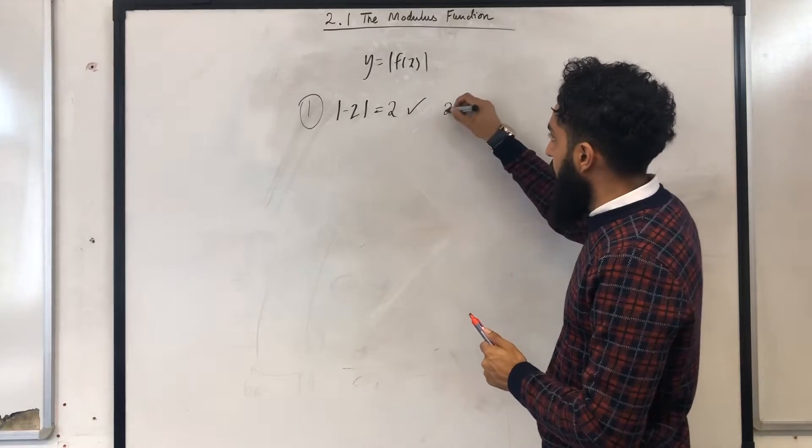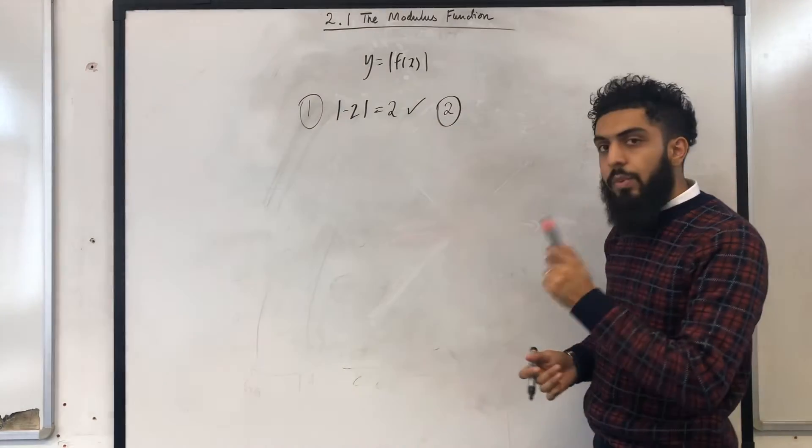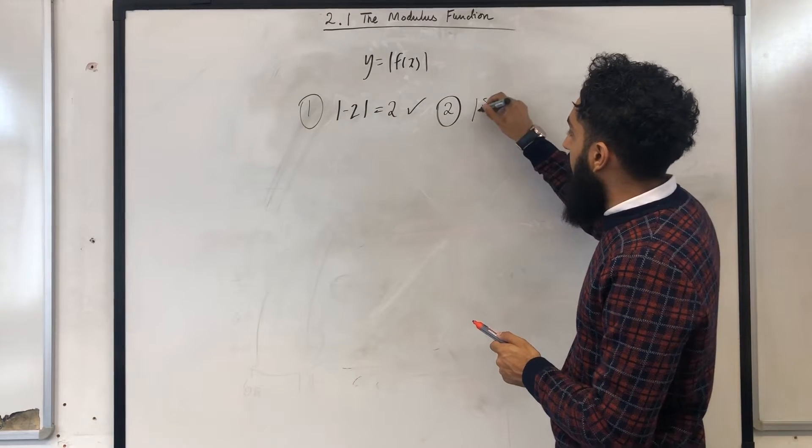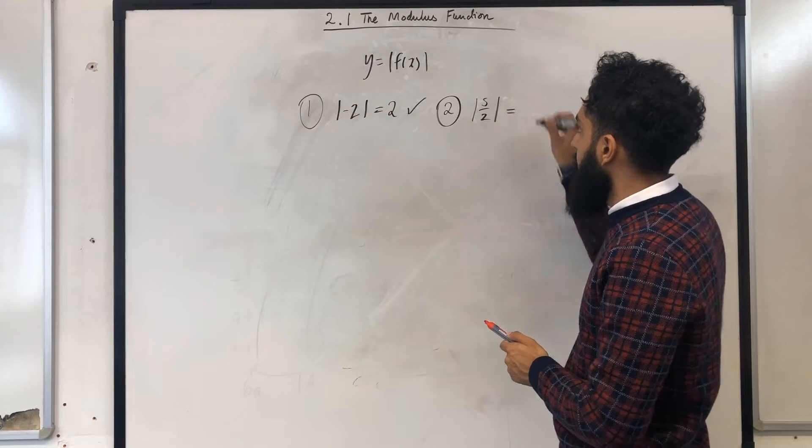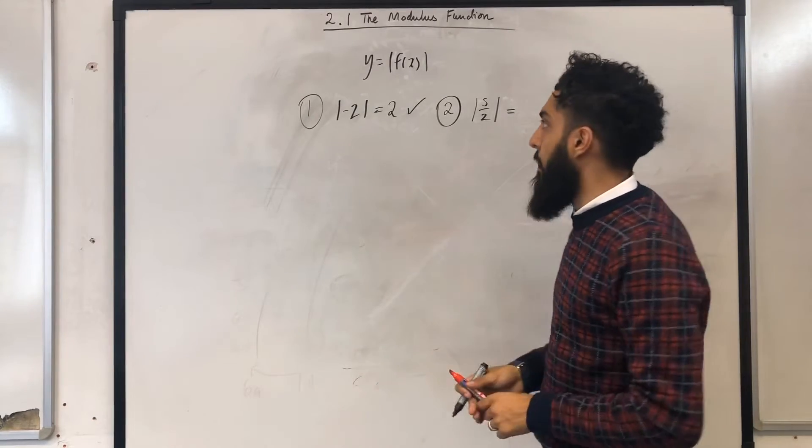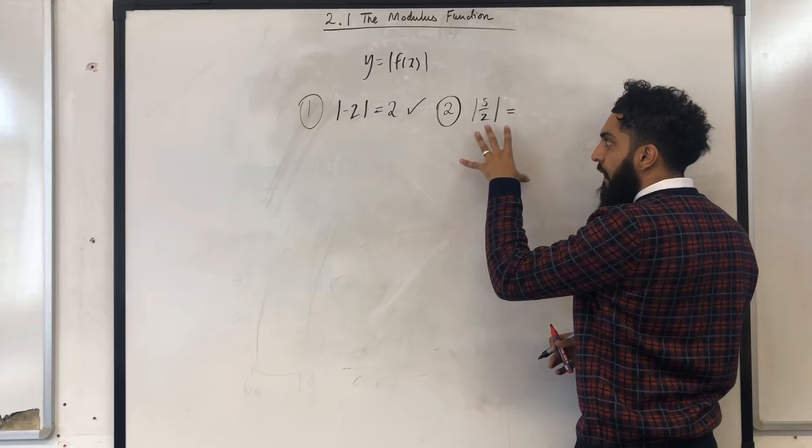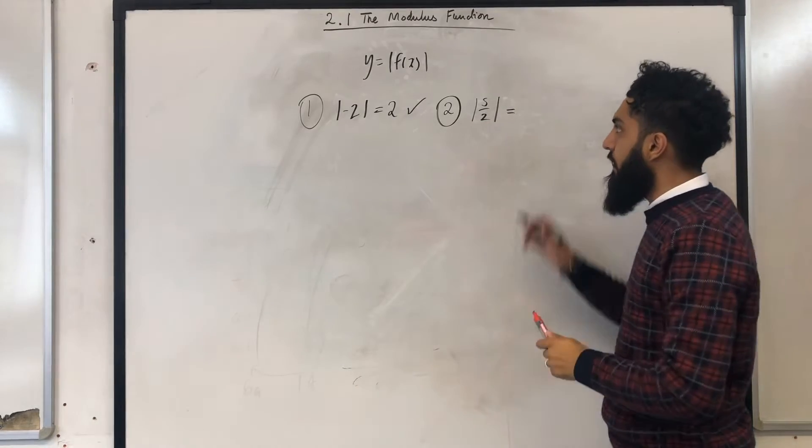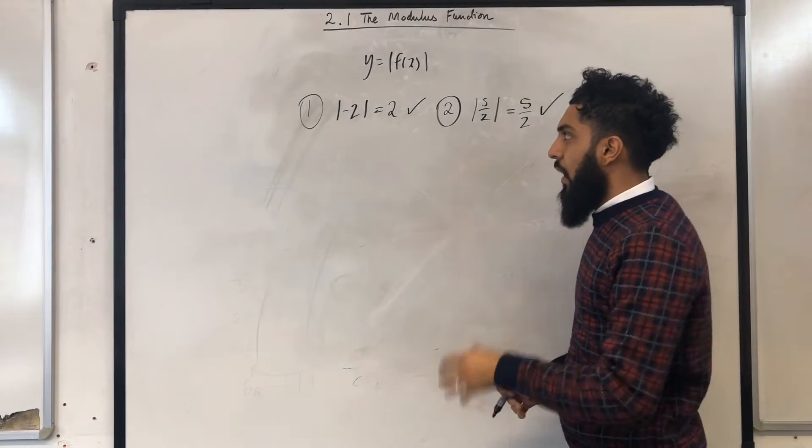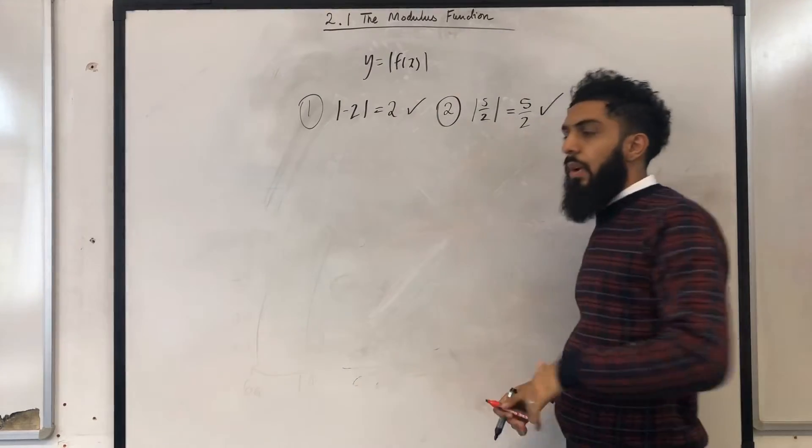Here's another example. I want to work out the modulus of 5 over 2. The modulus of a number is just the positive value of the number. So in this case the modulus of 5 over 2 is just 5 over 2. So example 1 and 2 were straightforward.